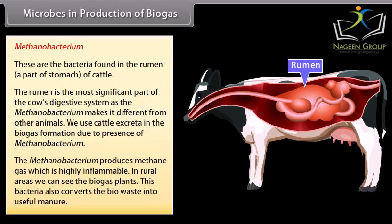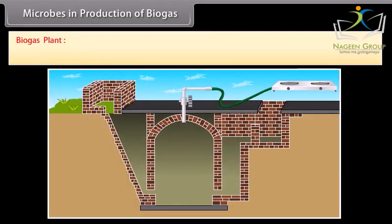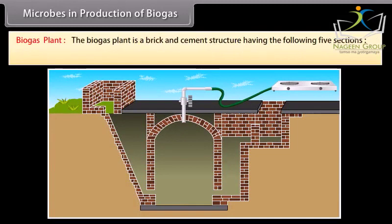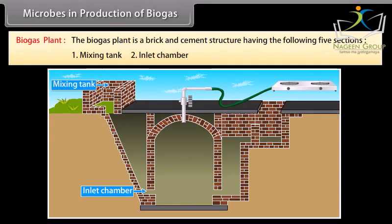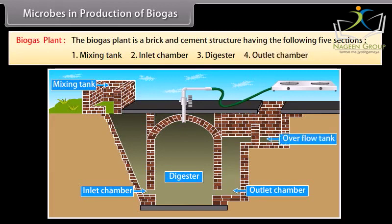Methanobacterium produces methane gas, which is highly inflammable. In rural areas we can see biogas plants. This bacteria also converts bio-waste into useful manure. The biogas plant is a brick and cement structure having the following five sections: (1) Mixing tank, (2) Inlet chamber, (3) Digester, (4) Outlet chamber, (5) Overflow tank.